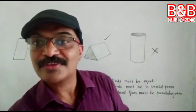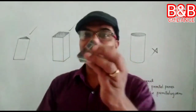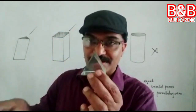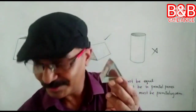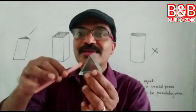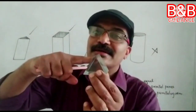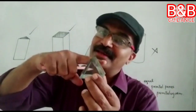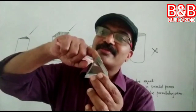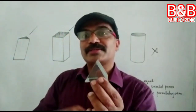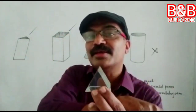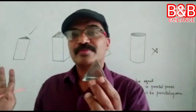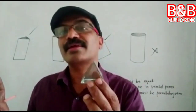But for a triangular prism, that is not the case. The emergent ray will not be parallel to the incident ray, because these refracting surfaces are not parallel — they are inclined to each other.